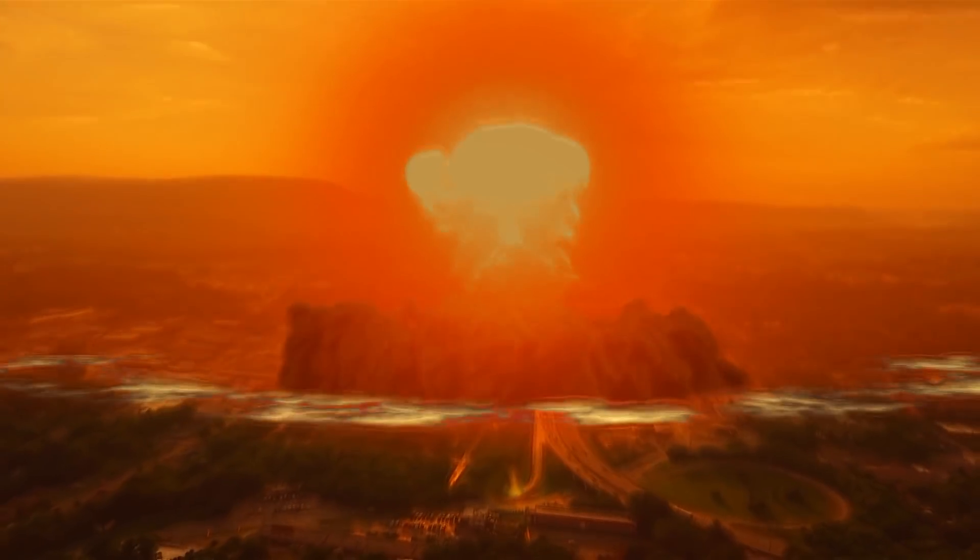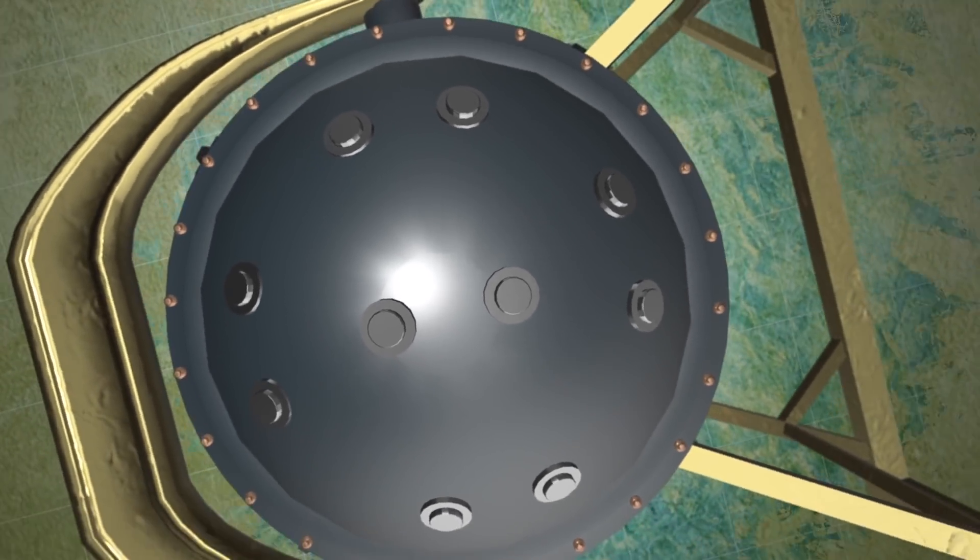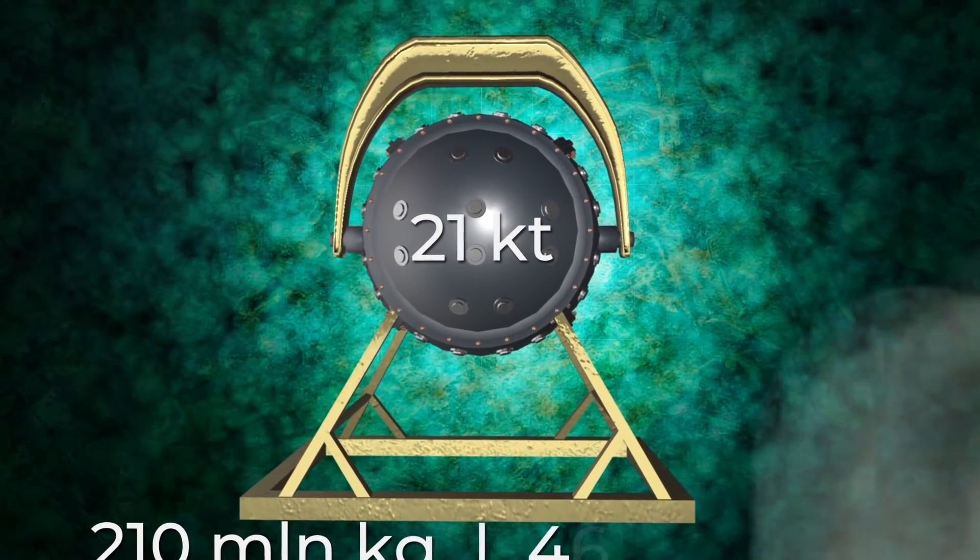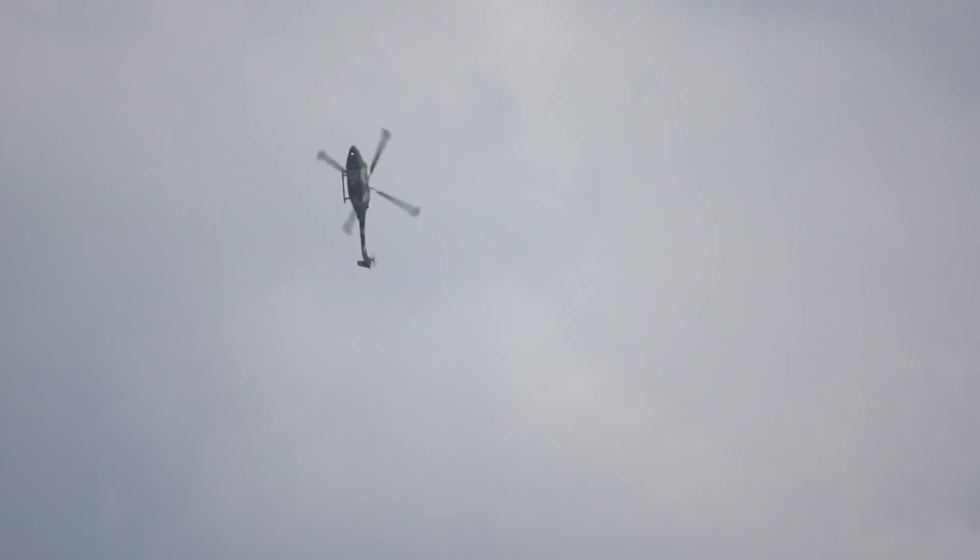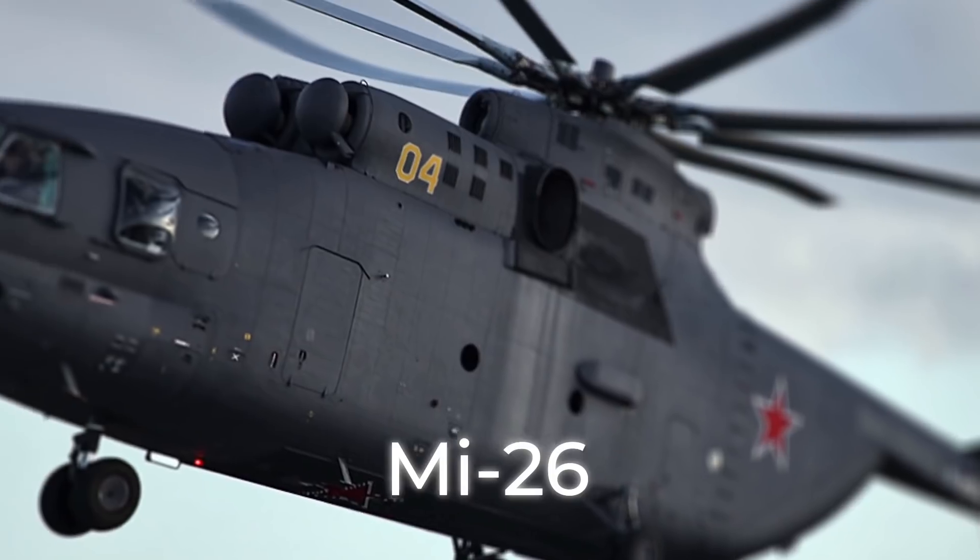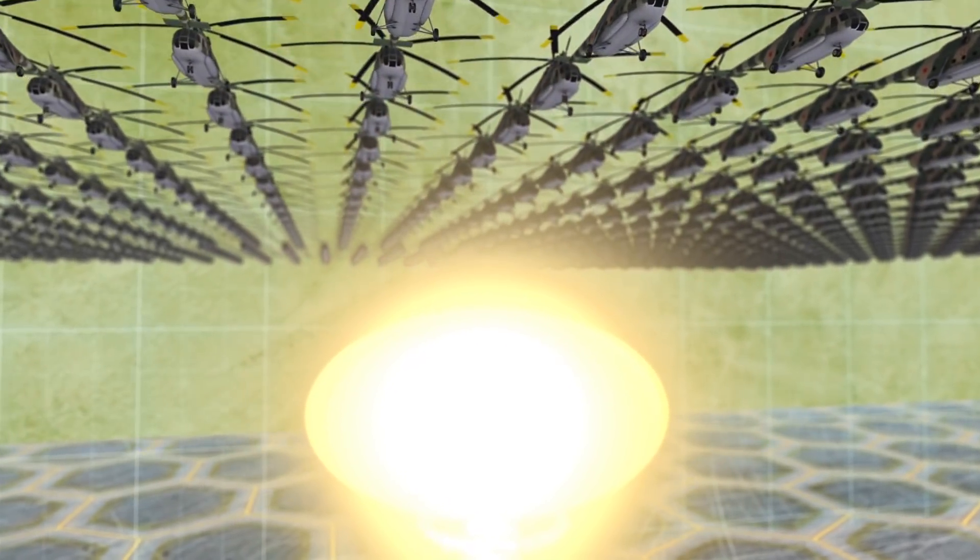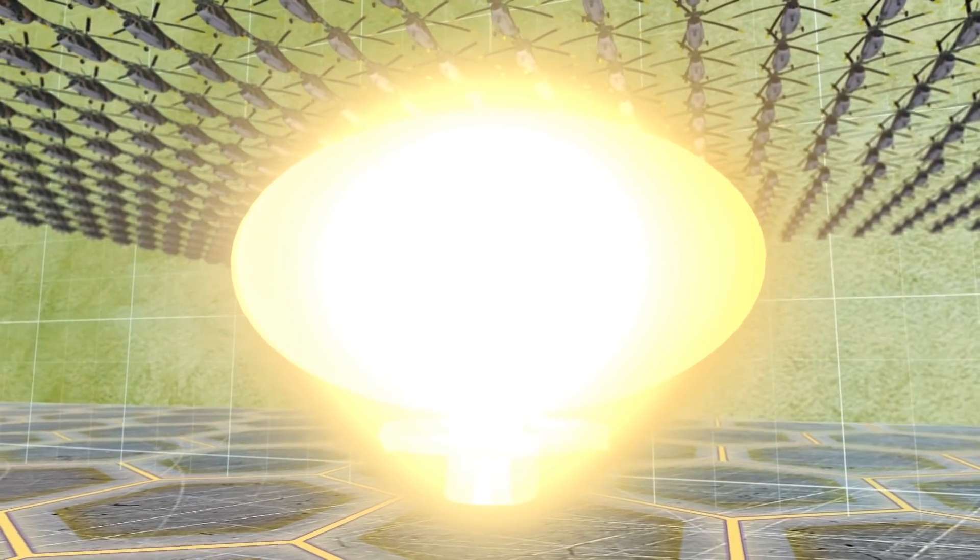But what if a nuclear bomb has already exploded? Is it possible to prevent the consequences of the explosion by freezing everything around? To neutralize the consequences of the explosion of the gadget with a capacity of 21 kilotons, 210 million kilograms of liquid nitrogen would be required. In order to lift such a quantity, it would take 10,500 of the largest Mi-26 helicopters which are used in firefighting. As soon as all these helicopters pour this mass of nitrogen into the nuclear mushroom cloud, then a real apocalypse will begin.